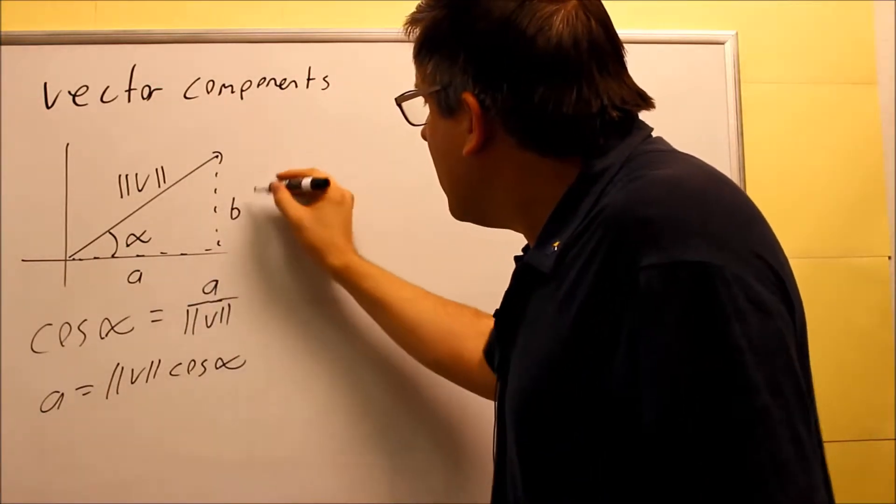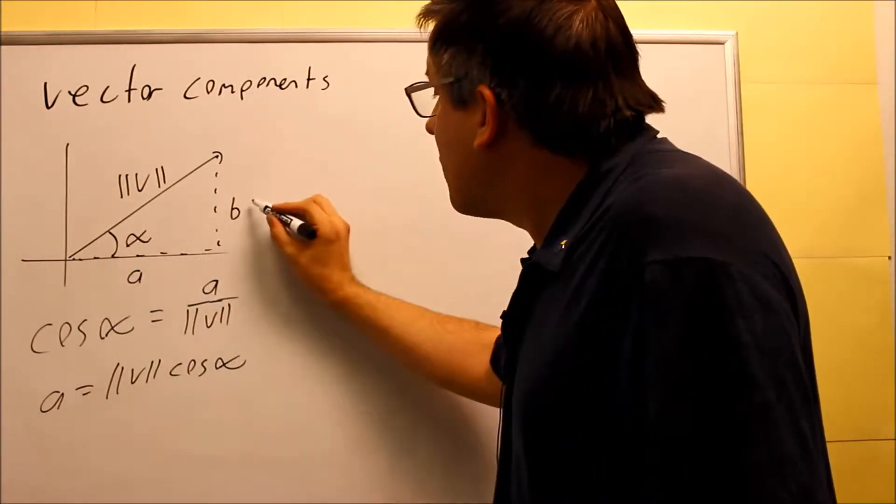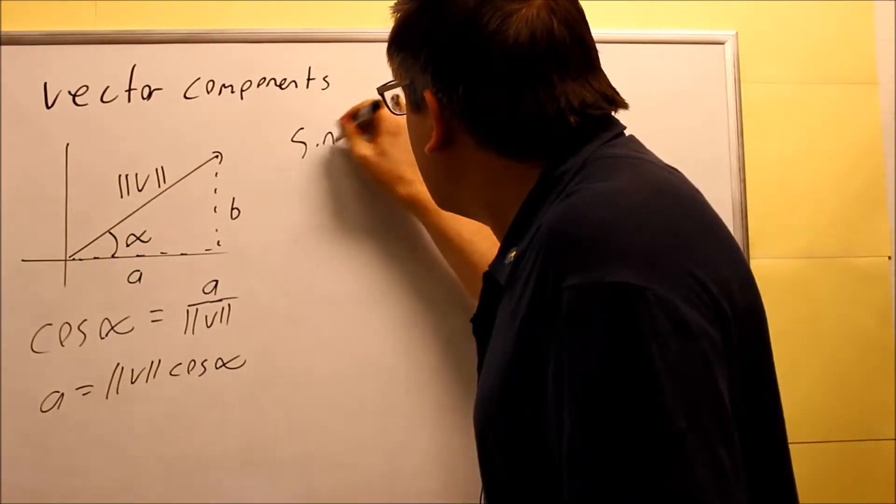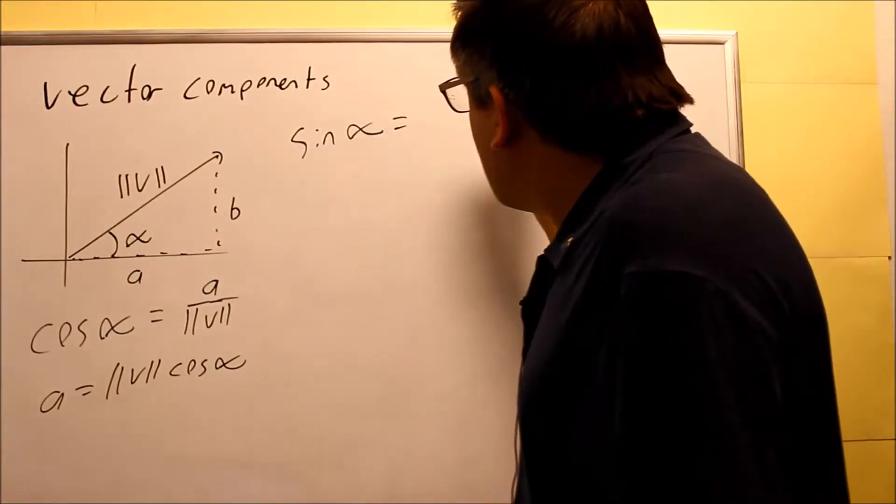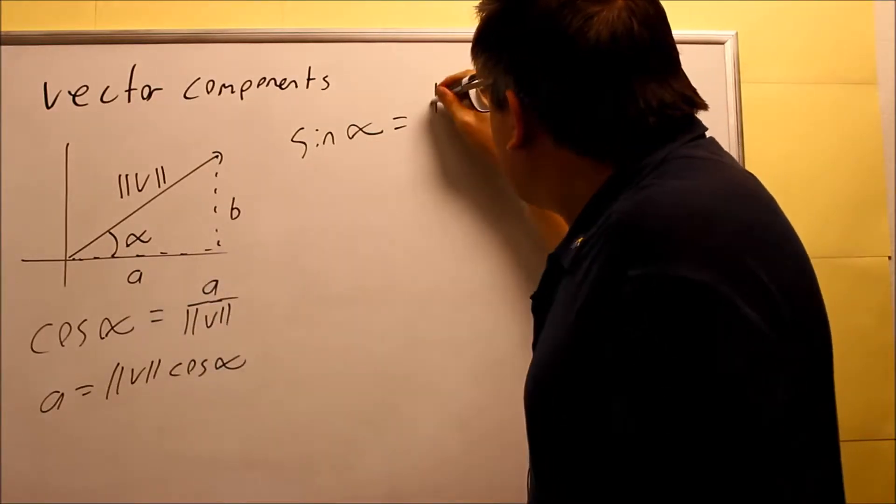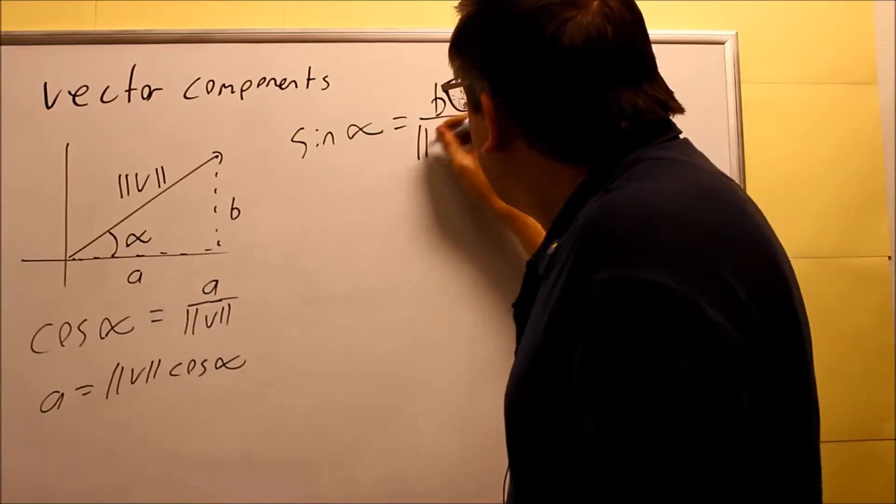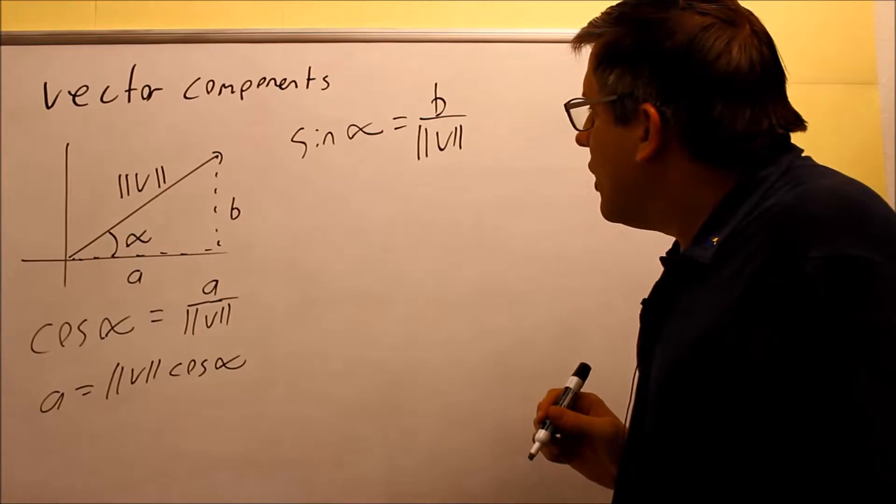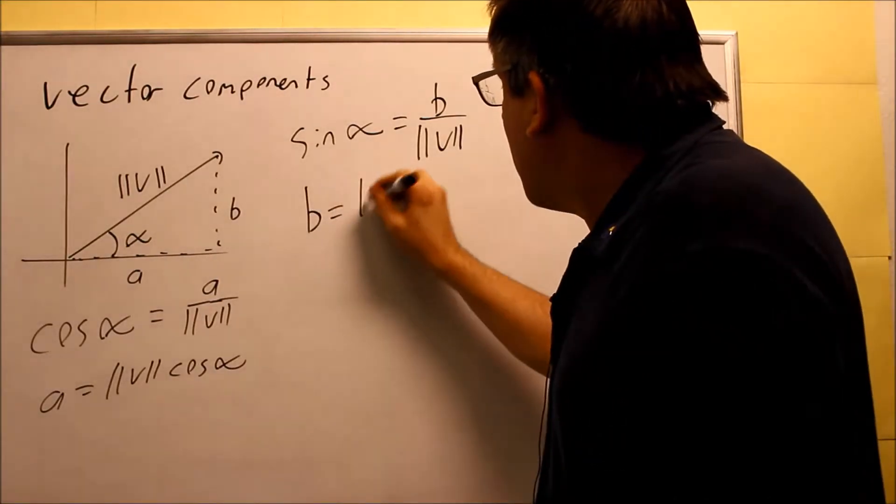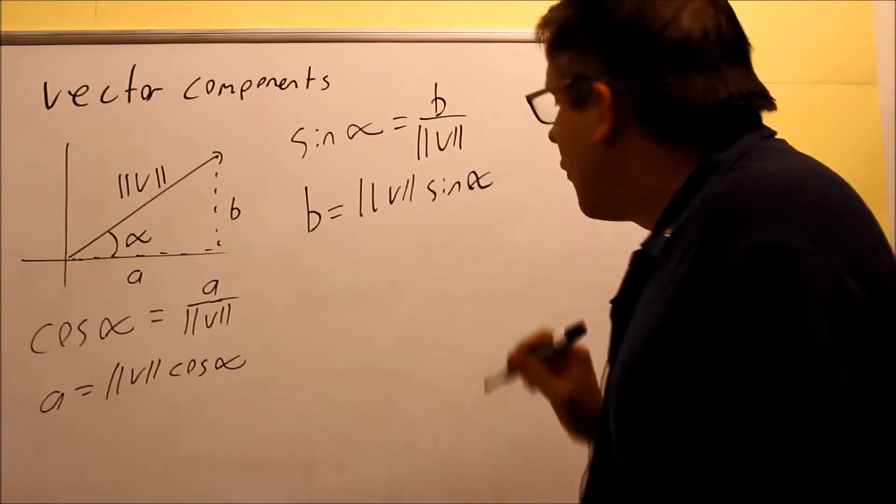Next, I want to relate the B. Now the B is involving the opposite, so that's opposite over hypotenuse. That's sine alpha is equal to the opposite, which is B, over the hypotenuse, which is magnitude of V. And if I solve that for B, I get magnitude of V times sine alpha.